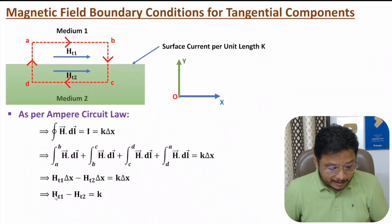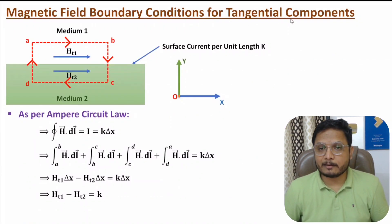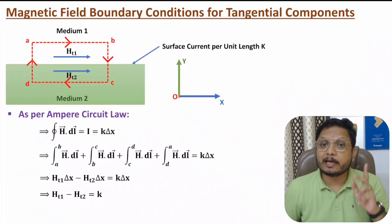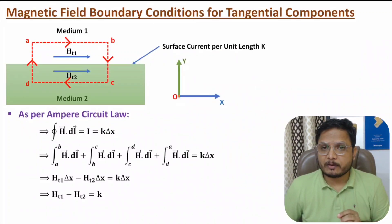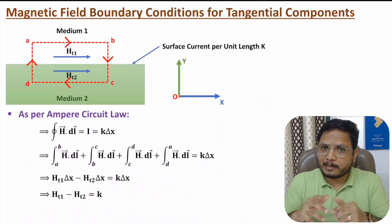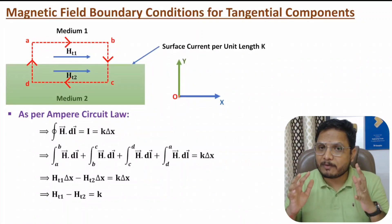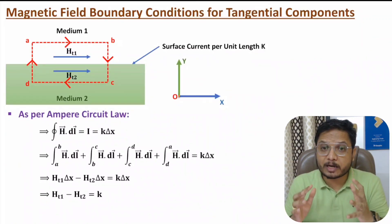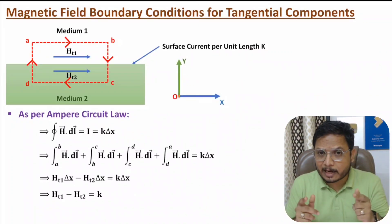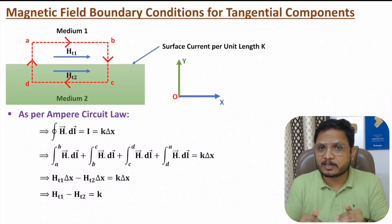So HT1 − HT2 = K, where K is the surface current per unit length. There is a discontinuity in magnetic field intensity determined by the surface current with the tangential component, while with the normal component there is no discontinuity. These equations are essential for solving examples. In the next video I'll explain an interesting problem based on magnetic field boundary conditions using these concepts. I hope you enjoyed this session — do leave any questions in the comment section. Thank you for watching.